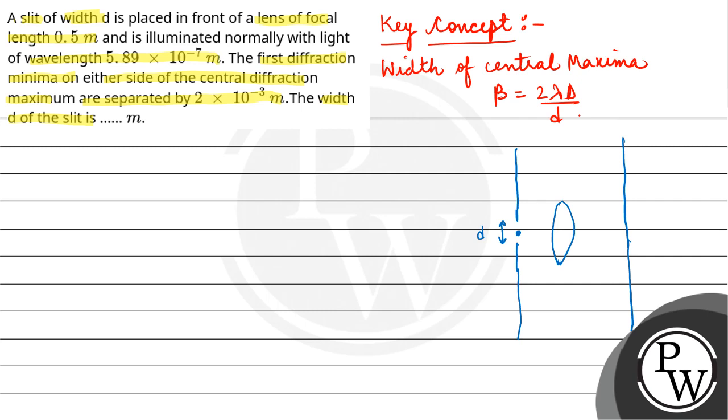diffraction pattern. In the center, central maxima, then minima like this. So this is your central maxima. Its width is 2λD/d, and the D is equal to the focal length of the lens.